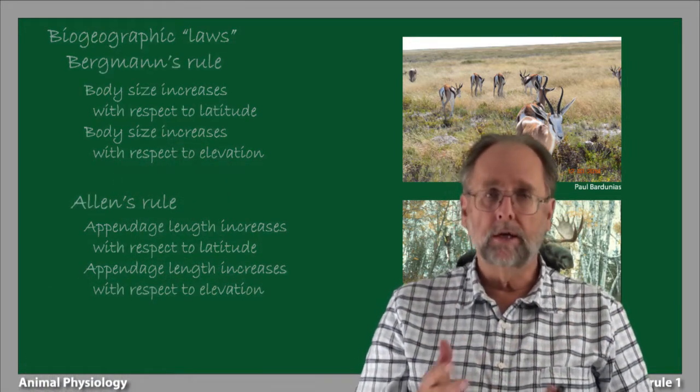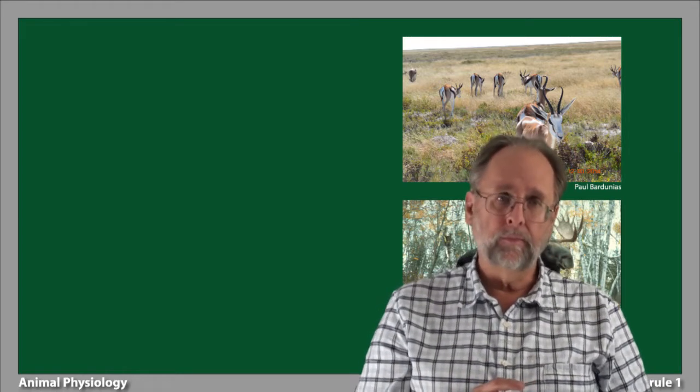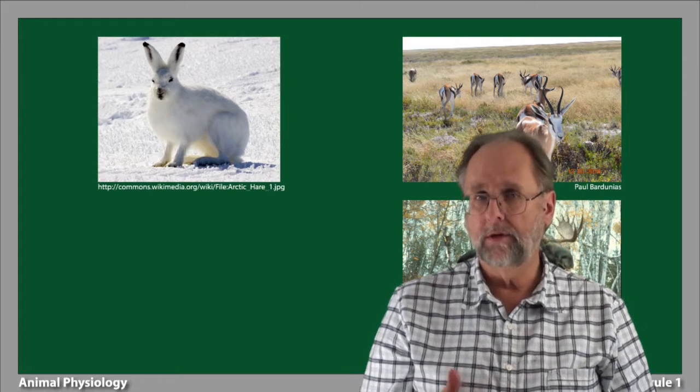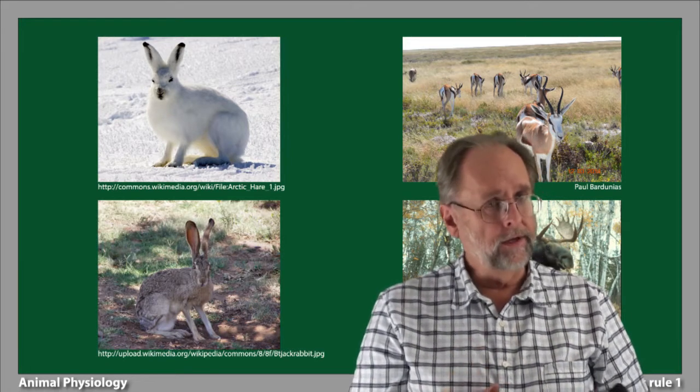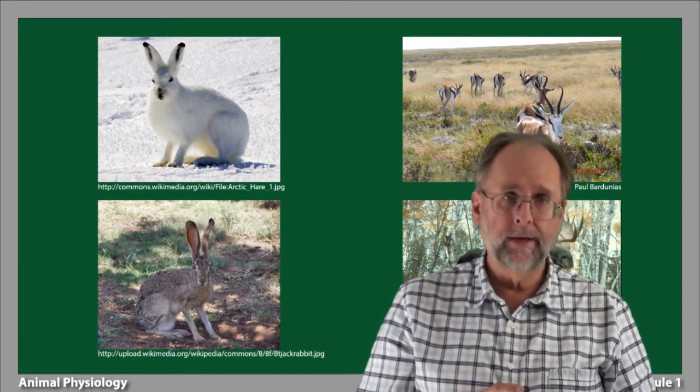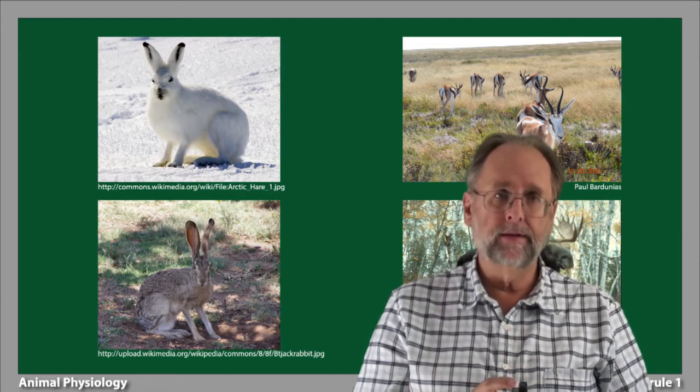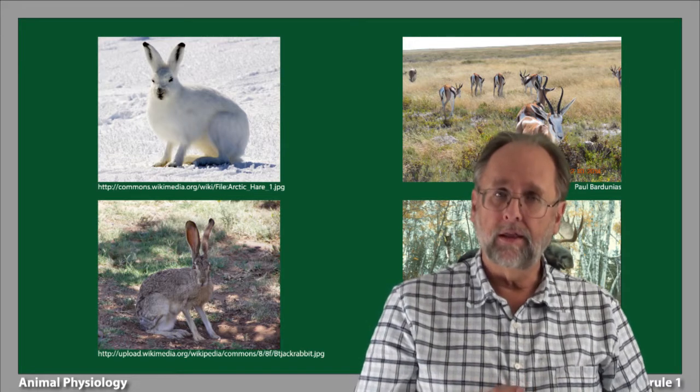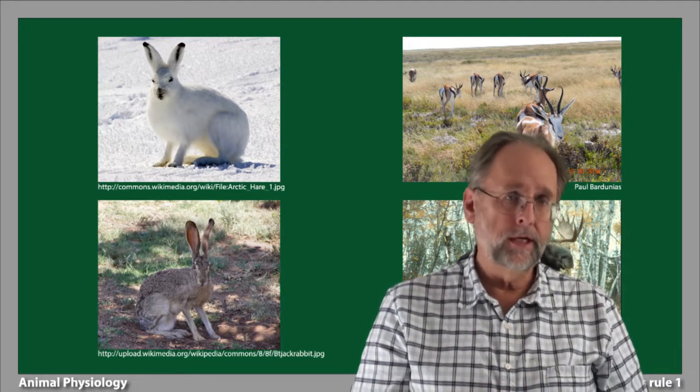It's also not hard to come up with examples of Allen's Rule. The classic one is the comparison of the Arctic hare with the desert hare. Arctic hares have shorter and stouter appendages, this is especially evident in the ears, compared to the desert hares, which have relatively long and thin limbs and quite long ears.